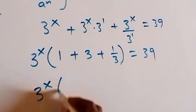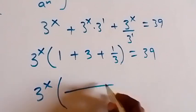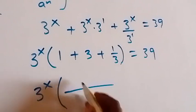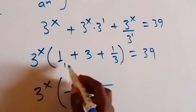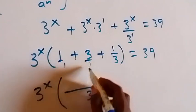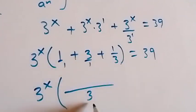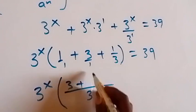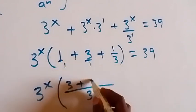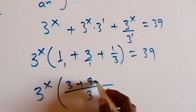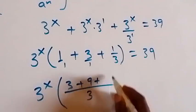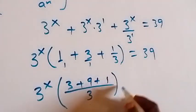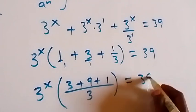In the next step, we can bring this together as one fraction. The common denominator is 3. So we have 1 times 3, that's 3; plus 3 times 3, that's 9; plus 1 — giving us 13 over 3. This equals 39.